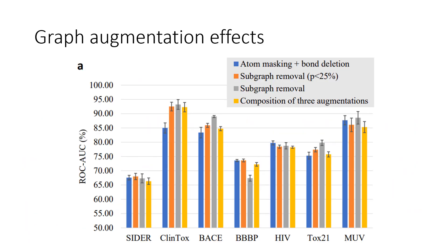With the three different types of graph augmentation methods that they created, they also investigated them by comparing each one to the results they got. As it turns out, subgraph removal with a 25% ratio performed the best on average, but it didn't perform that well on the BBBP dataset due to its sensitivity to topological changes. Combining all three augmentations actually hurt the performance compared to just using subgraph removal. Overall, subgraph removal seems to be a pretty good choice, but the optimal augmentation strategy is always task-dependent.